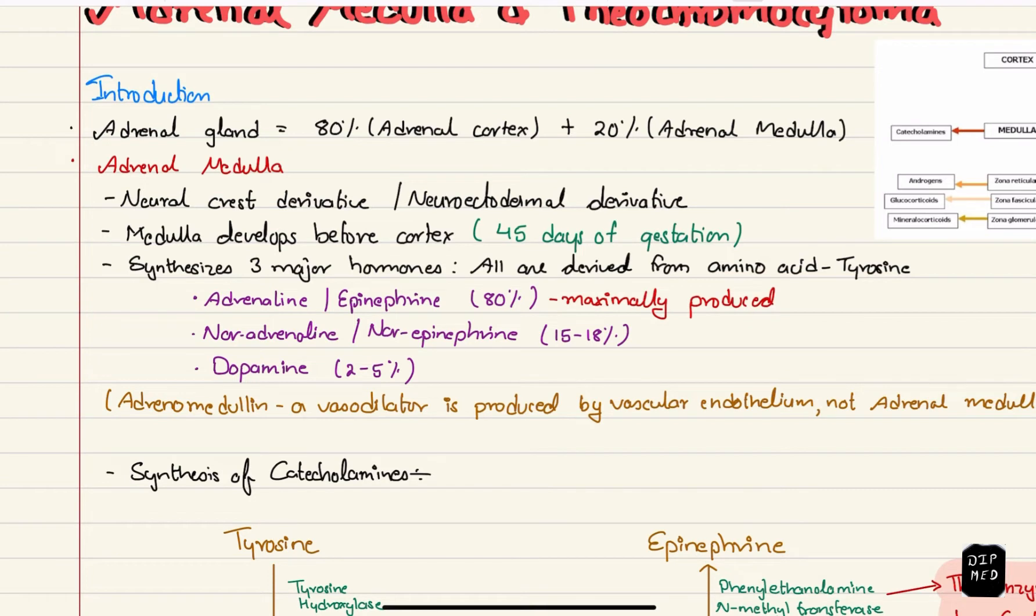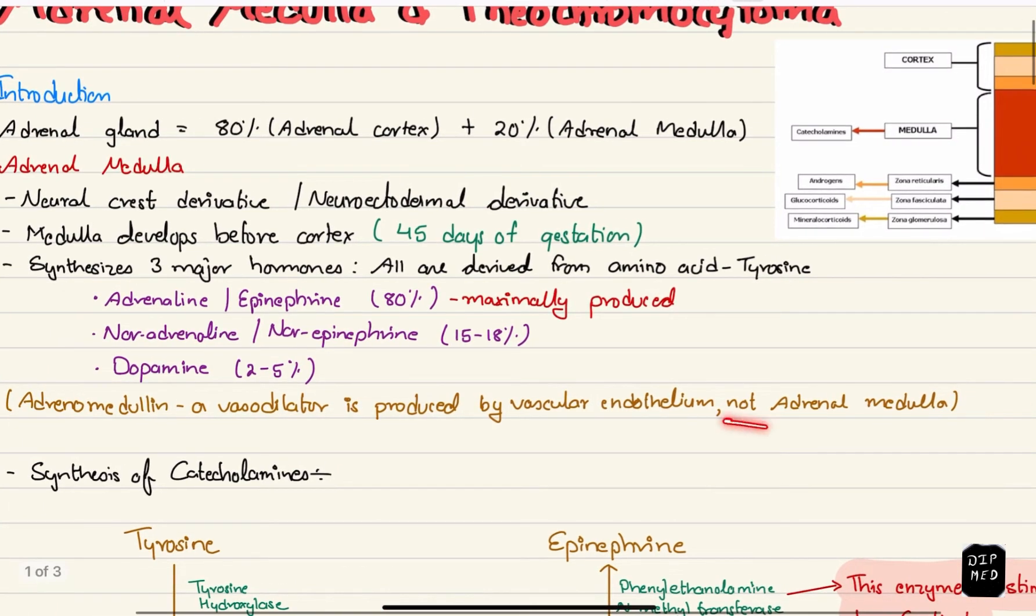The three hormones are adrenaline or epinephrine, noradrenaline or norepinephrine and dopamine. Out of these three, adrenaline is produced in maximum amount that is 80%, followed by noradrenaline 15 to 18%, and then rarely dopamine. Adrenomedulin or vasodilator is actually produced by vascular endothelium not adrenal medulla.